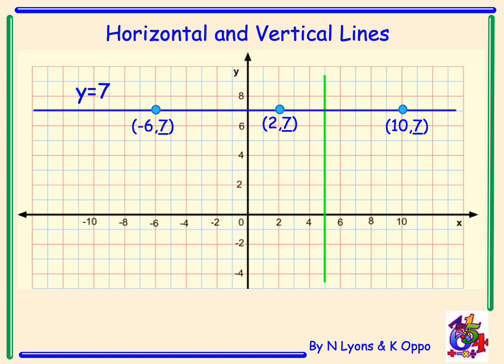Now let's look at the vertical green line. Looking at points along the line: (5, -4), (5, 2), (5, 9). In this case the y coordinates are changing, but the x coordinate is always 5. That line is cutting the x axis at x equals 5, so the equation of the green line is x equals 5.